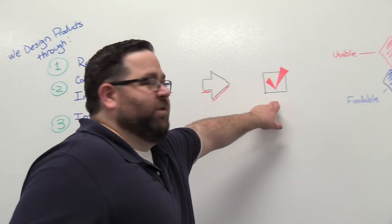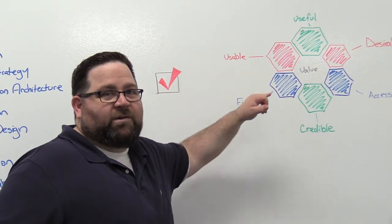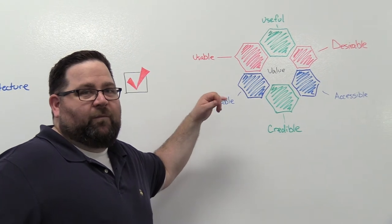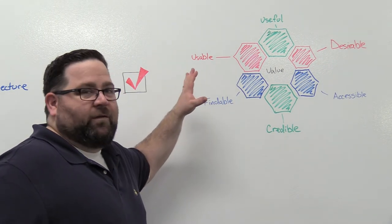How do we do that? We make sure we check off. This is called the UX Honeycomb. It's the information architect Peter Morville made this infographic.